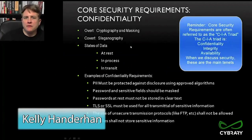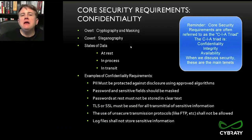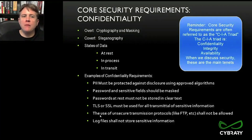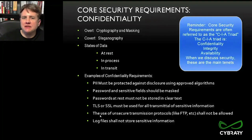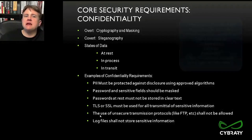Let's talk about the different types of requirements. We've already said that our requirements should be SMART. Now we're going to discuss what types of requirements we have. One of the first elements we'll look at is core security requirements. What we need to address is how we're going to satisfy the CIA — confidentiality, integrity, and availability. That's our starting point, and we'll address other areas of security as well.